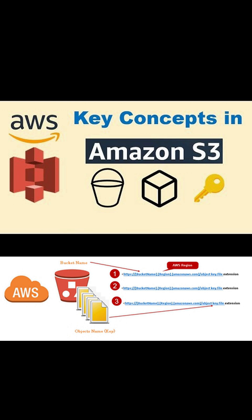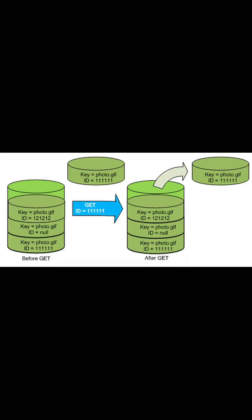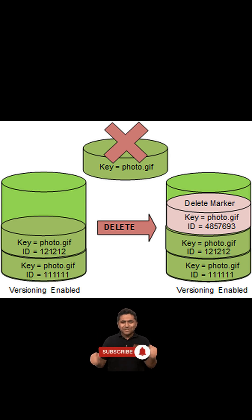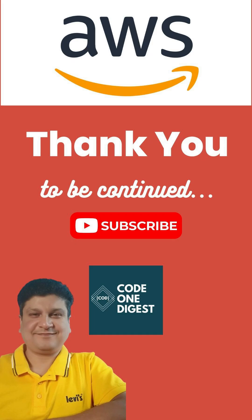The combination of bucket, object key, and version ID uniquely identifies the object in each bucket. You can use S3 versioning to keep multiple variants of an object in the same bucket. With S3 versioning, you can preserve, retrieve, and restore every version of every object stored in your bucket.